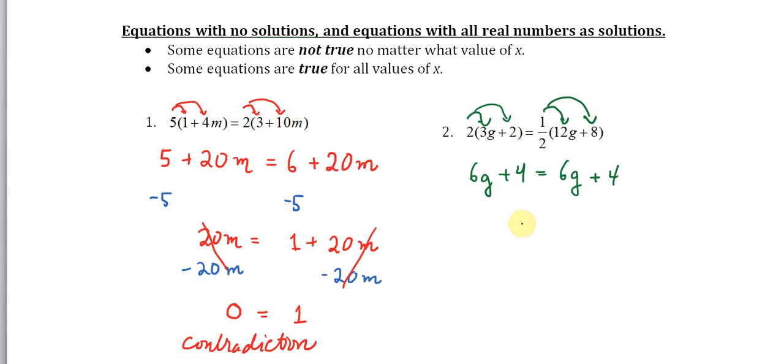Then I can subtract four from both sides, and I end up with 6g equals 6g.